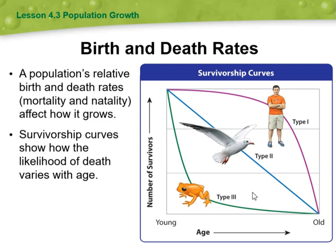If the birth rate exceeds the death rate, the population tends to grow. While if the death rate exceeds the birth rate, the population tends to decline. These rates are important for understanding population dynamics and for planning healthcare and social services as well.